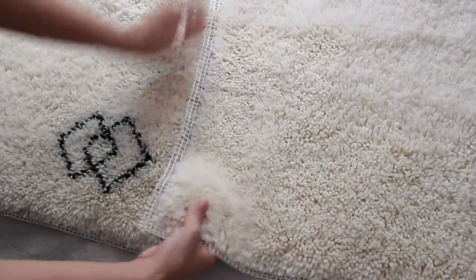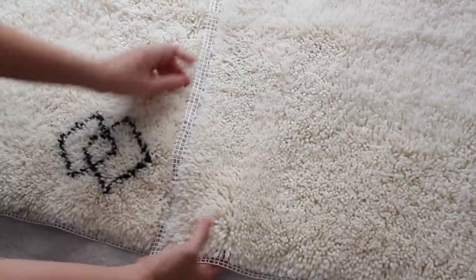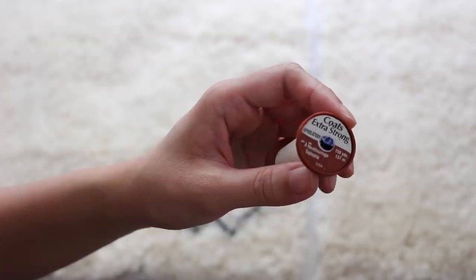I connected the 2 canvases by overlapping the 4 rows. With a needle and thread, I combined them with a whip stitch.